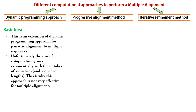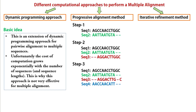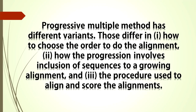The progressive alignment method is another approach. Here, two sequences are chosen and aligned by standard pairwise alignment, and this alignment is fixed. Then a third sequence is chosen and aligned to the first alignment. This process is iterated until all sequences have been aligned. Remember that in this method, the first pairwise alignment is never changed. This method has different variants that differ in how to choose the order of alignment, how sequences are progressively included into the growing alignment, and the procedure used to align and score the alignments.